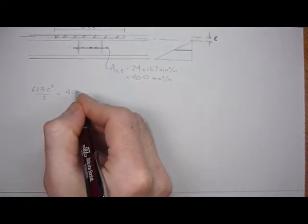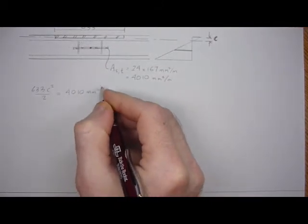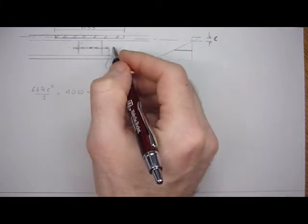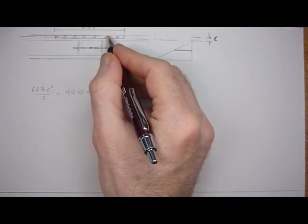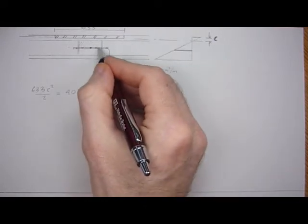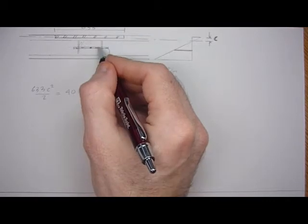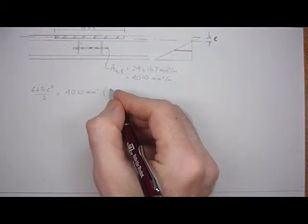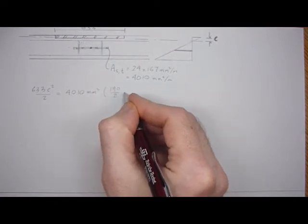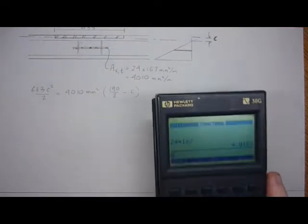4,010 millimeters squared times its distance to the neutral axis, which is going to be this distance, which is 190. The steel is mid-centered into the block, so it's at 190 over 2 from the face shell edge, minus C. So 190 over 2 minus C.